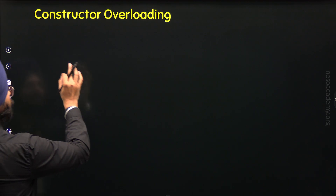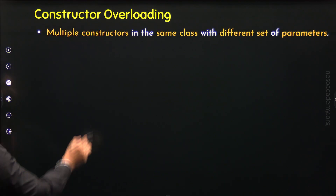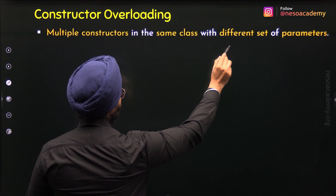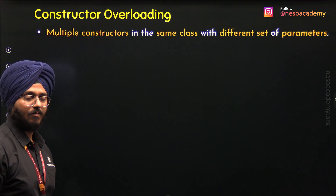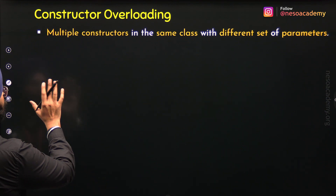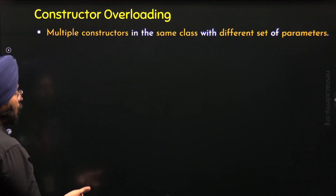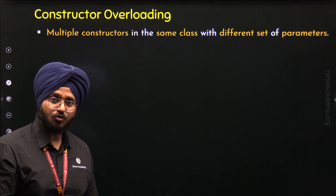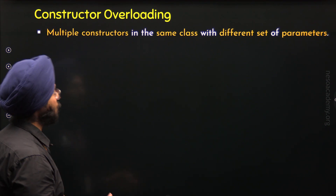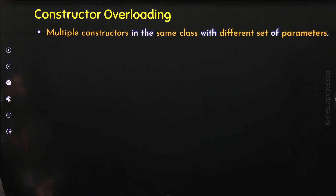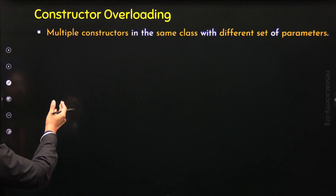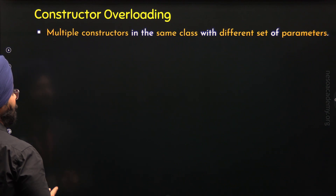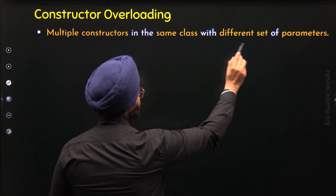Just like Function Overloading, it is possible to define multiple constructors in the same class with a different set of parameters. Because a constructor is just like a function, and as we can do Function Overloading in C++, we can also do Constructor Overloading. This means we can define multiple constructors in the same class, but the condition is that they must have a different set of parameters.